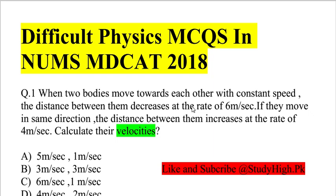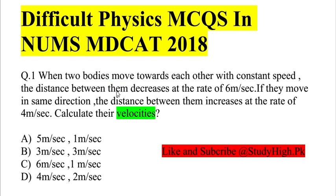Question number one: When two bodies move towards each other with constant speed, the distance between them decreases at the rate of 6 meters per second. If they move in the same direction, the distance between them increases at the rate of 4 meters per second. Calculate their velocities.